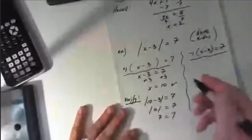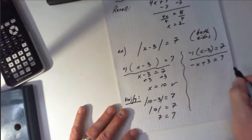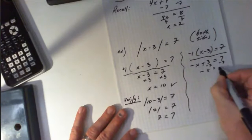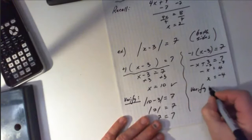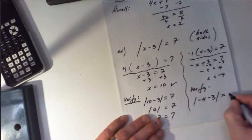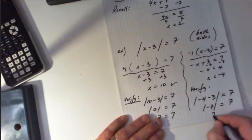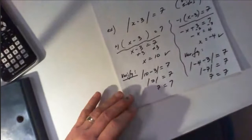On the other side, you will distribute to get negative x plus 3 equals 7. Subtracting 3 from both sides gives me 4, and x would be equal to negative 4. Checking — again, we must verify. So negative 4 minus 3 equals negative 7, and the absolute value of negative 7 equals 7. This is true as well, so both answers will work in this case.